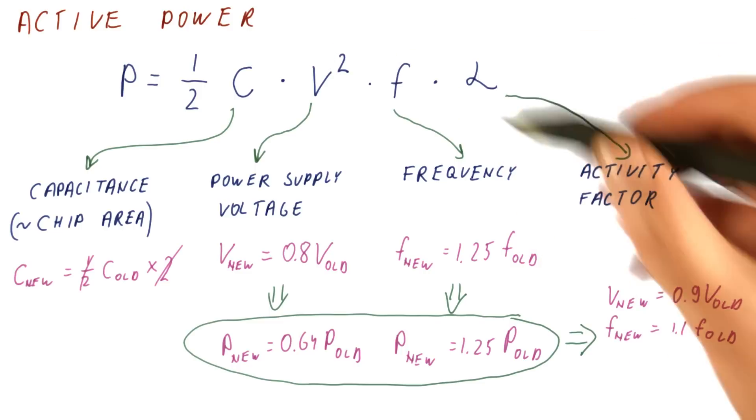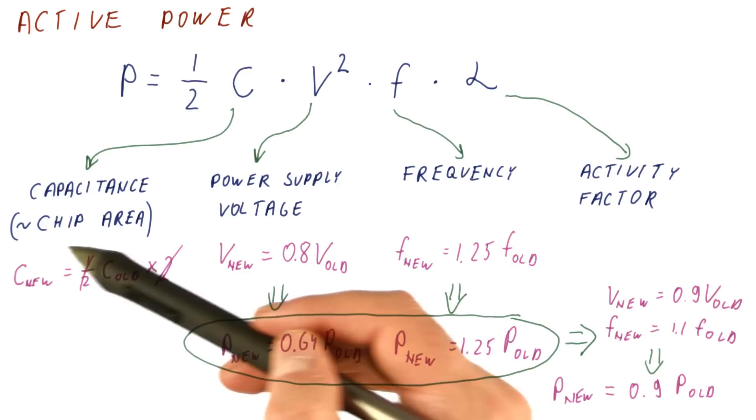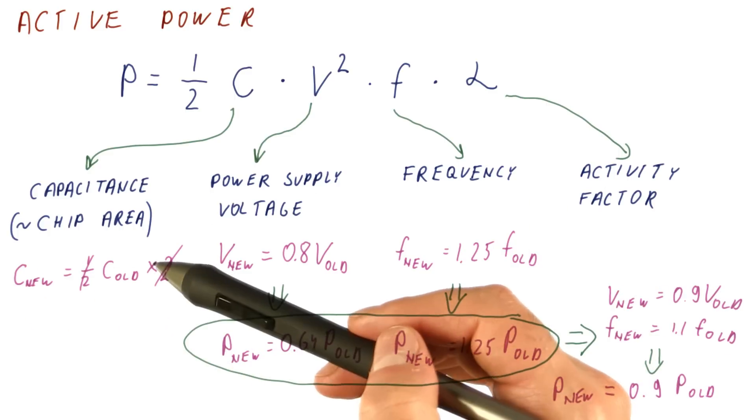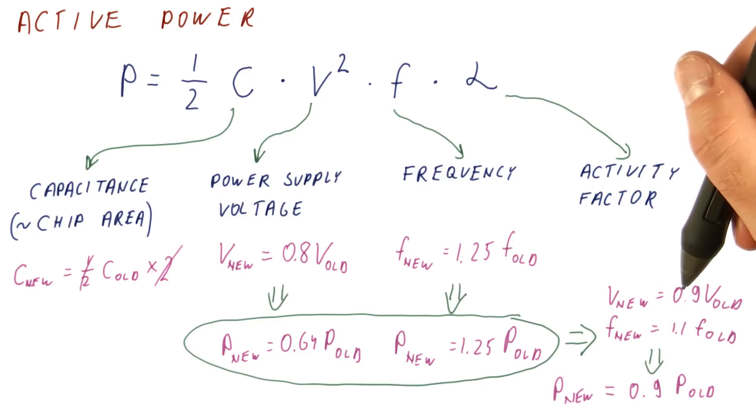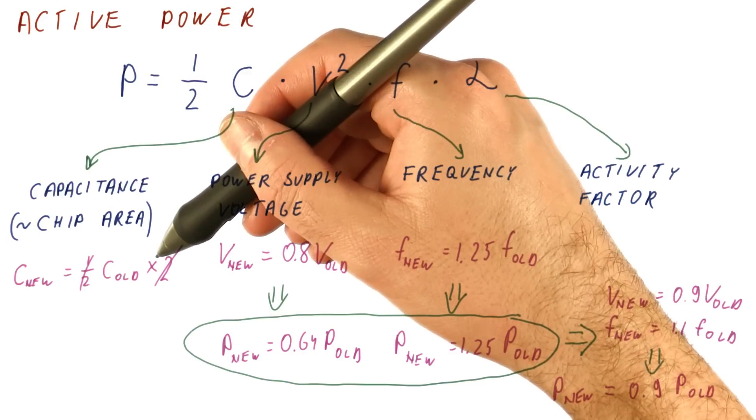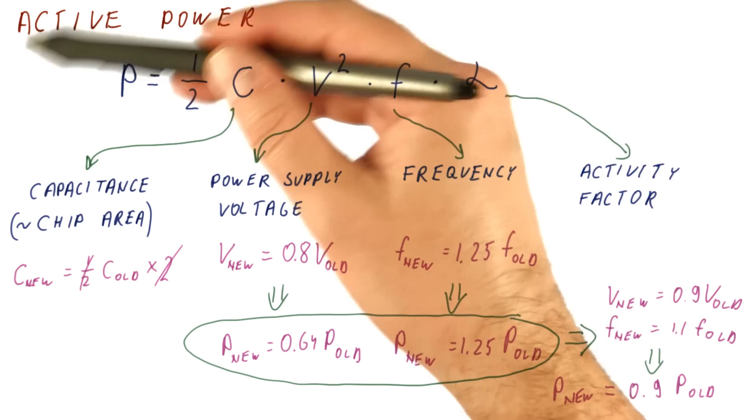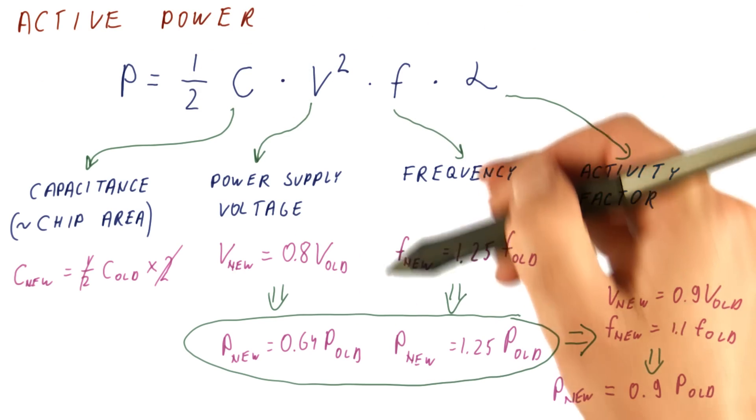If you now apply this equation, we get that the new power is about 90% of the old power. So what we got is now, we have a chip that is having two cores instead of one. It has a lower power supply voltage but a higher frequency. So each of these cores is 10% faster than it used to be, and yet we have lower power consumption.